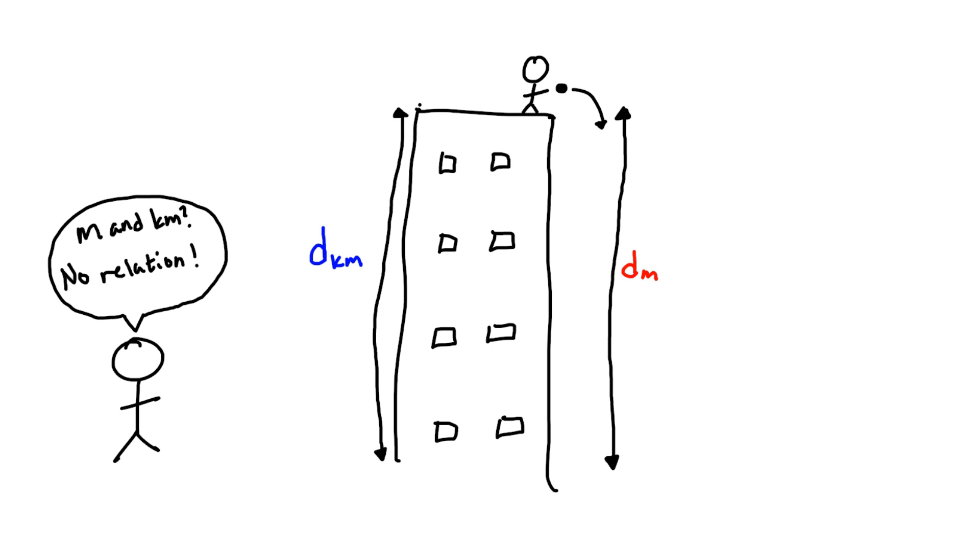After making all of the measurements, we see a surprising trend. The heights of the buildings are always related to the distances that the objects fall by exactly a factor of A. This constant seems like it's universal, but in reality it's just telling us that meters and kilometers are really just different names we gave to the same thing.